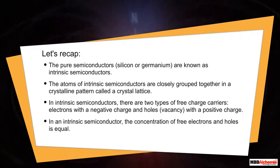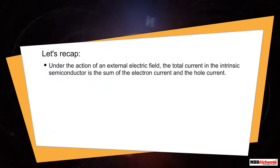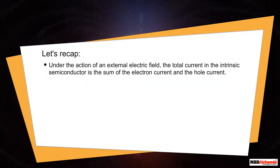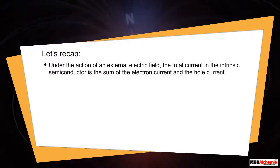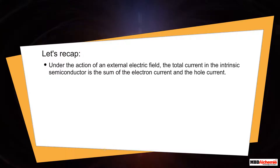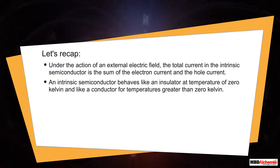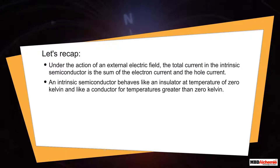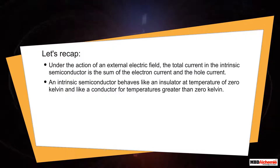In an intrinsic semiconductor, the concentration of free electrons and holes is equal. Under the action of an external electric field, the total current in the intrinsic semiconductor is the sum of the electron current and the hole current. An intrinsic semiconductor behaves like an insulator at a temperature of 0 kelvin and like a conductor for temperatures greater than 0 kelvin.